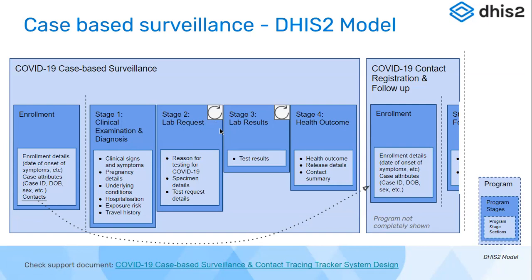Stage two was a repeatable program stage, indicated by the repeatable icon. For a person, multiple lab requests could be taken for multiple sample collections. There were scenarios where the first test results came back indeterminate, requiring new lab requests for a repeat test. Within the lab request form, you entered the reason for testing, the type of samples collected — nasal, throat, or other — and the details of the test request. The lab request event had to be generated as many times as the test was required for that specific patient.